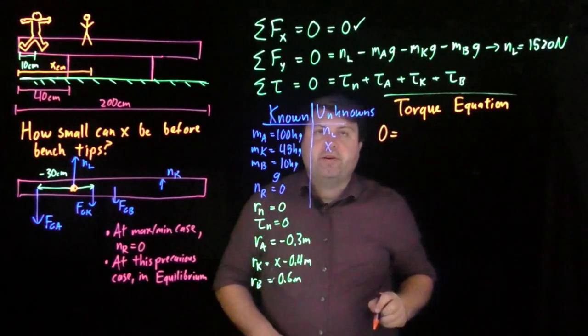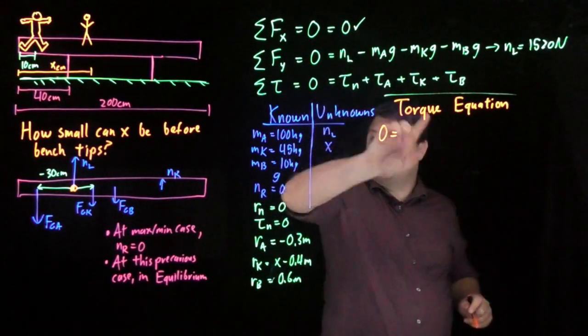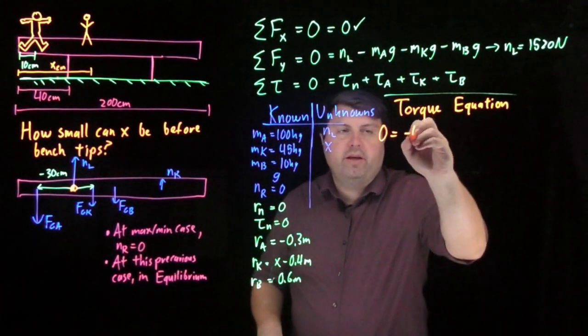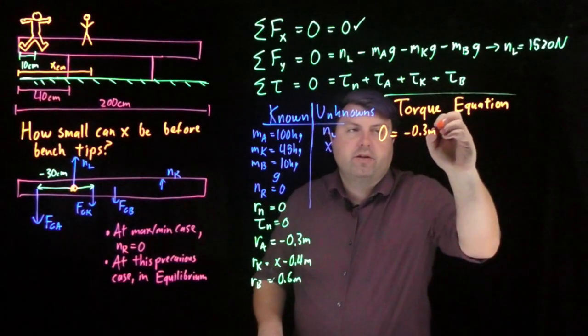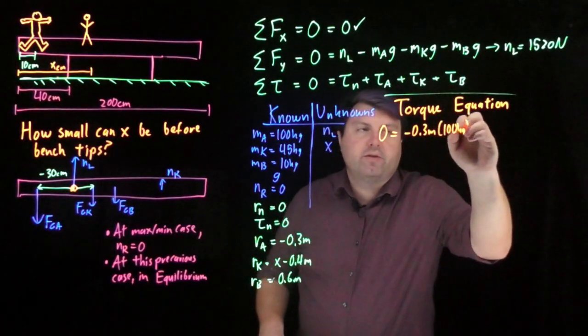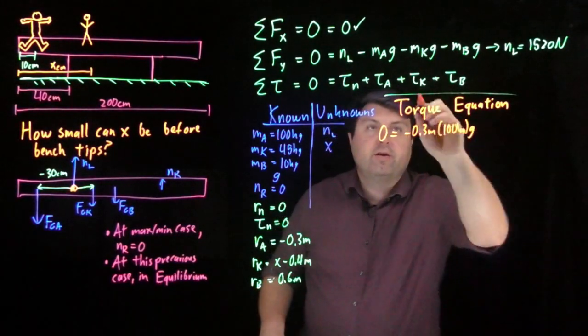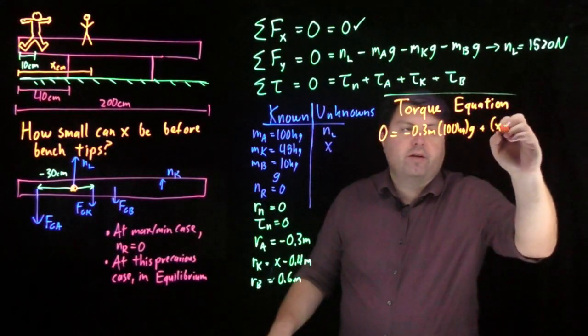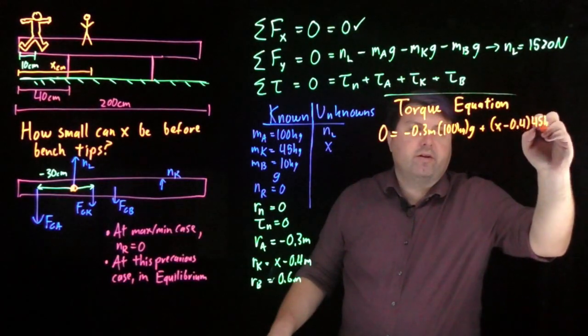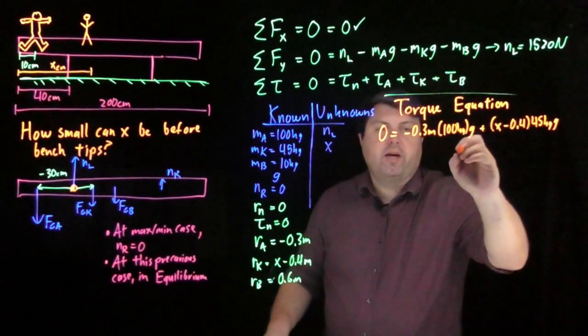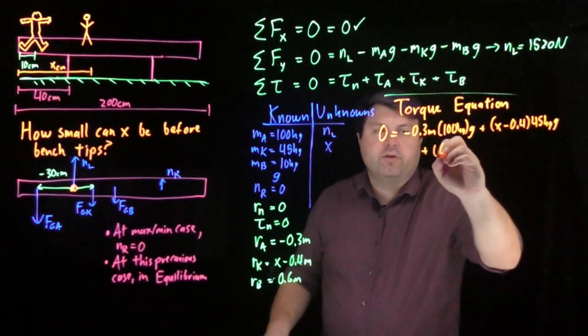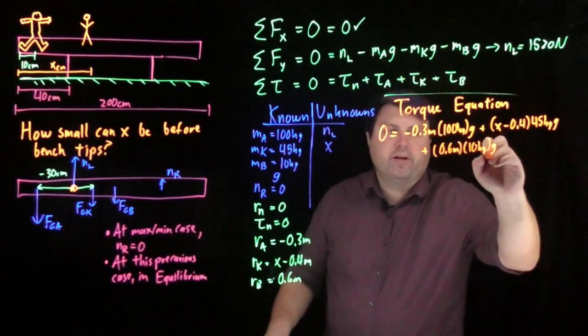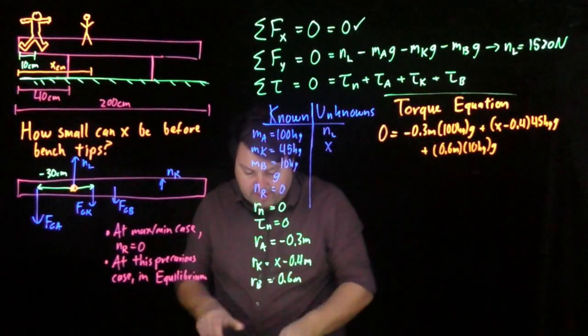So I have zero equals, my torque for my normal force is zero because the radius is zero. And then I have negative 0.3 meters times 100 kilograms times g. My kid is going to be plus x minus 0.4 times 45 kilograms times g.